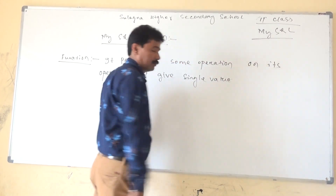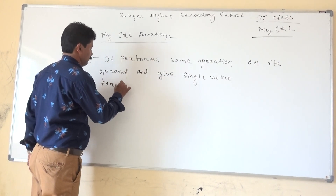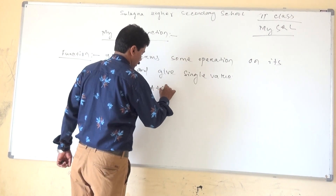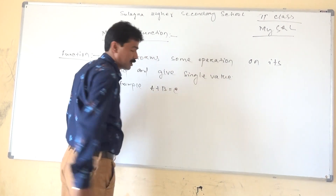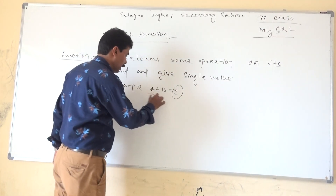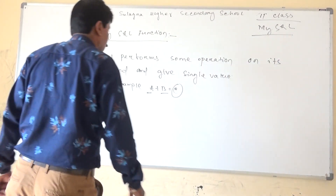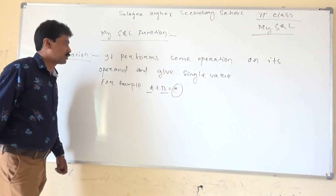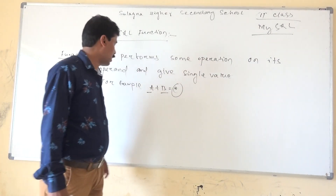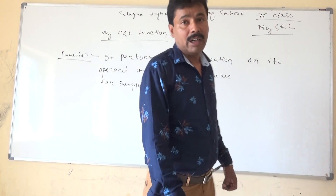For example, A plus B equal to C. Here C is the single value, and A and B are the operands. So, the definition of function comes: it performs some operation on its operands and gives a single value. That is the definition of the function.